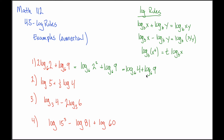Now that I have the sum of two different logs, I can use the first log rule, which allows me to multiply the two arguments together and combine into a single log. I get log base 6 of 9 times 4, which is 36. Log base 6 of 36 is asking: what power do I raise 6 to in order to get 36? The answer is 2, because 6 squared equals 36. There are other ways to do this problem, but I don't think any are as intuitive as this method.